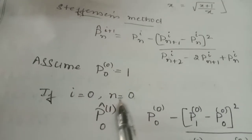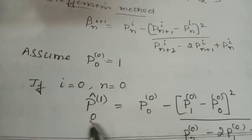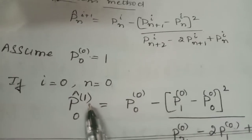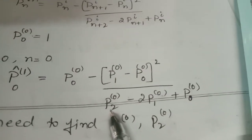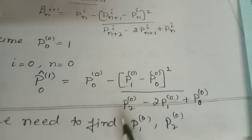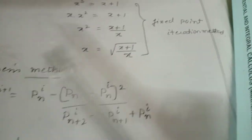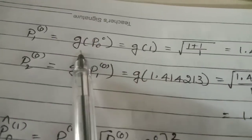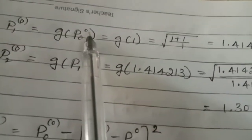Taking i = 0 and N = 0, we can find the P₀ cap value at the first iteration. To find P₀ cap at the first iteration, we need P₀(0), P₁(0), and P₂(0). We know only P₀(0); the initial value from the interval [1, 2] is taken as 1. We don't know P₁(0) and P₂(0), so we need to find those using the fixed point function.